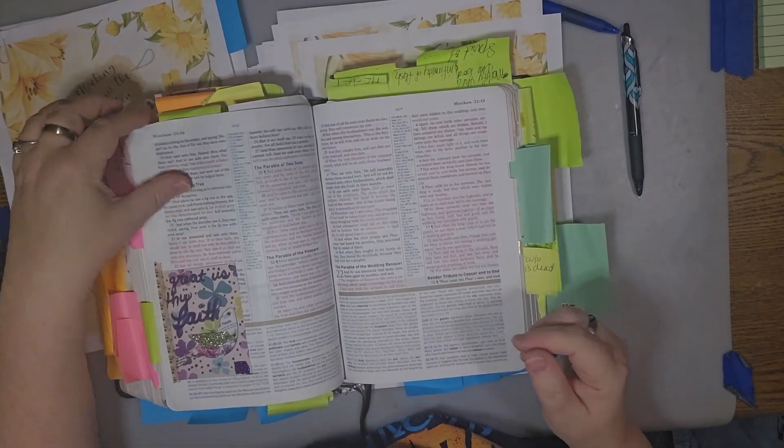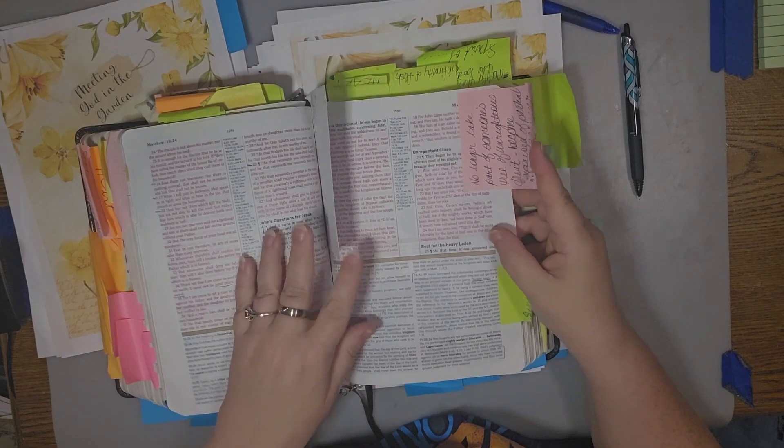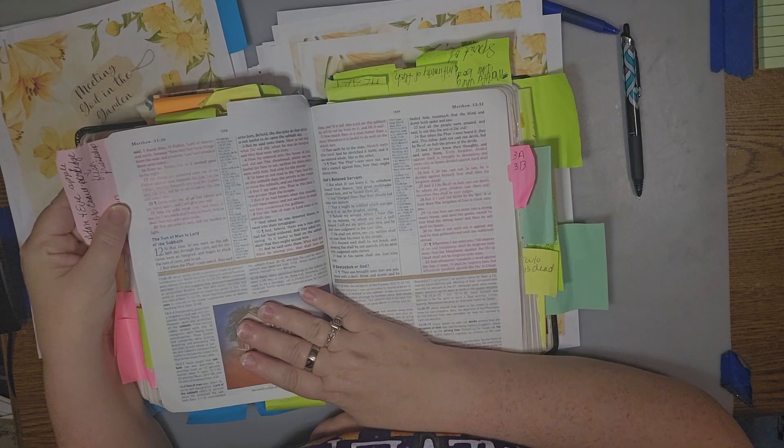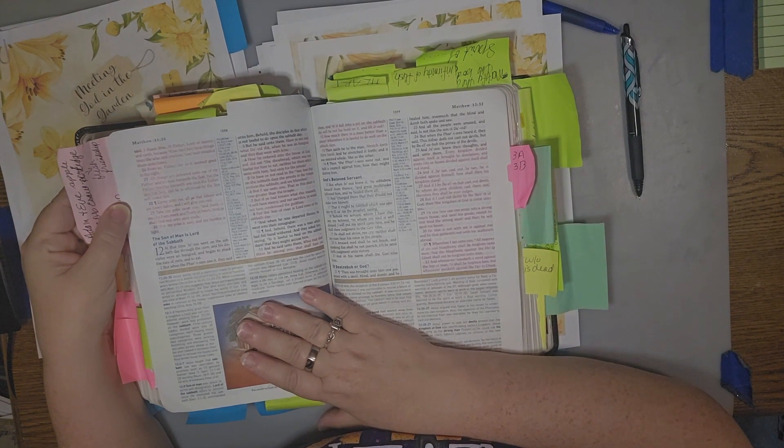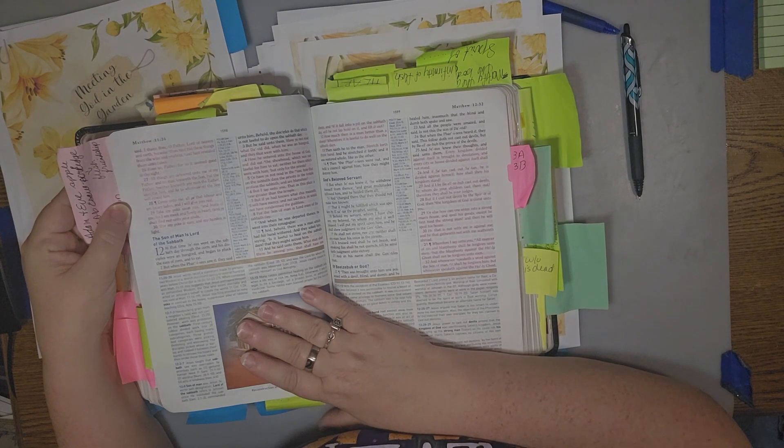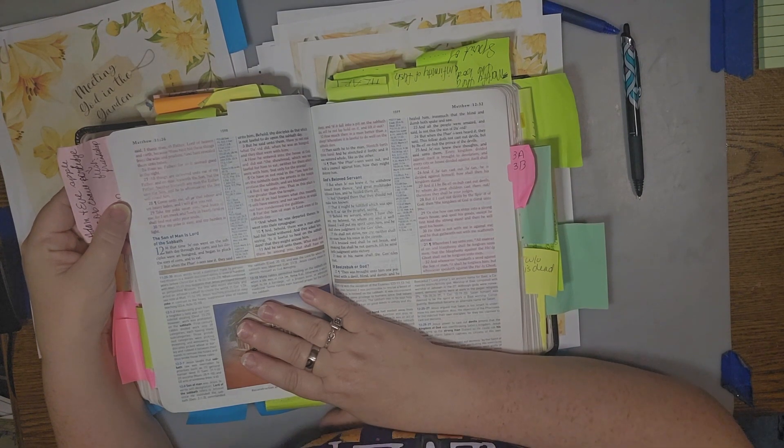Matthew 11, let's just get our Bible out. The best source we can get the word. 11:28 says, Come unto me, all ye that labor and are heavy laden, and I will give you rest. Take my yoke upon you and learn of me, for I am meek and lowly at heart, and ye shall find rest unto your souls. For my yoke is easy, and my burden is light.